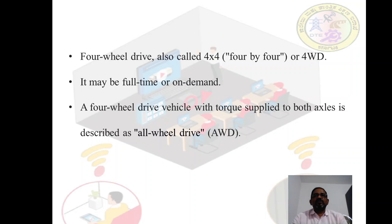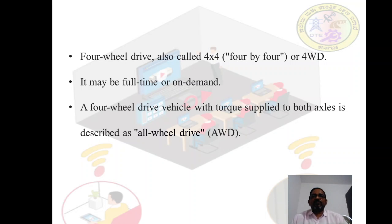Four-wheel drive, also called 4x4 or 4WD, refers to a two-axle vehicle drive capable of providing torque to all of its wheels simultaneously. It may be full-time or on-demand, typically linked via a transfer case providing an additional output drive shaft and in many instances additional gear ranges. A four-wheel drive vehicle with torque supplied to both axles is described as all-wheel drive (AWD). Four-wheel drive typically refers to specific components and functions intended for off-road applications.